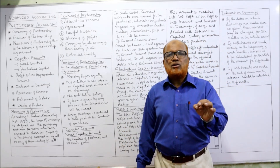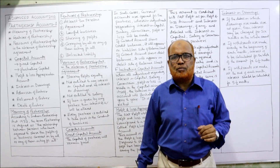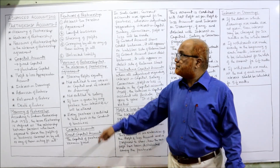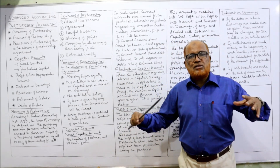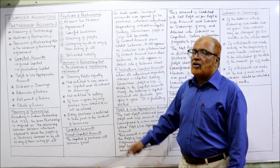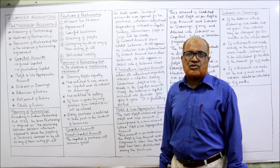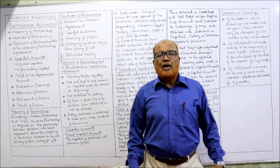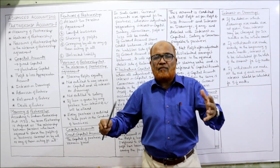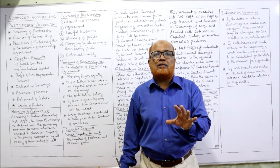Then comes agreement. Without agreement, no partnership firm will emerge. There should be an agreement between the persons — two or more. The agreement may be oral or in written form, but it is always preferable to be in writing. Next, lawful business: when two or more persons join together for running a business, the business must be lawful and should not be illegal. Then, sharing of profits: the partnership business has been formed to earn the profit and to share the profit by all the partners.